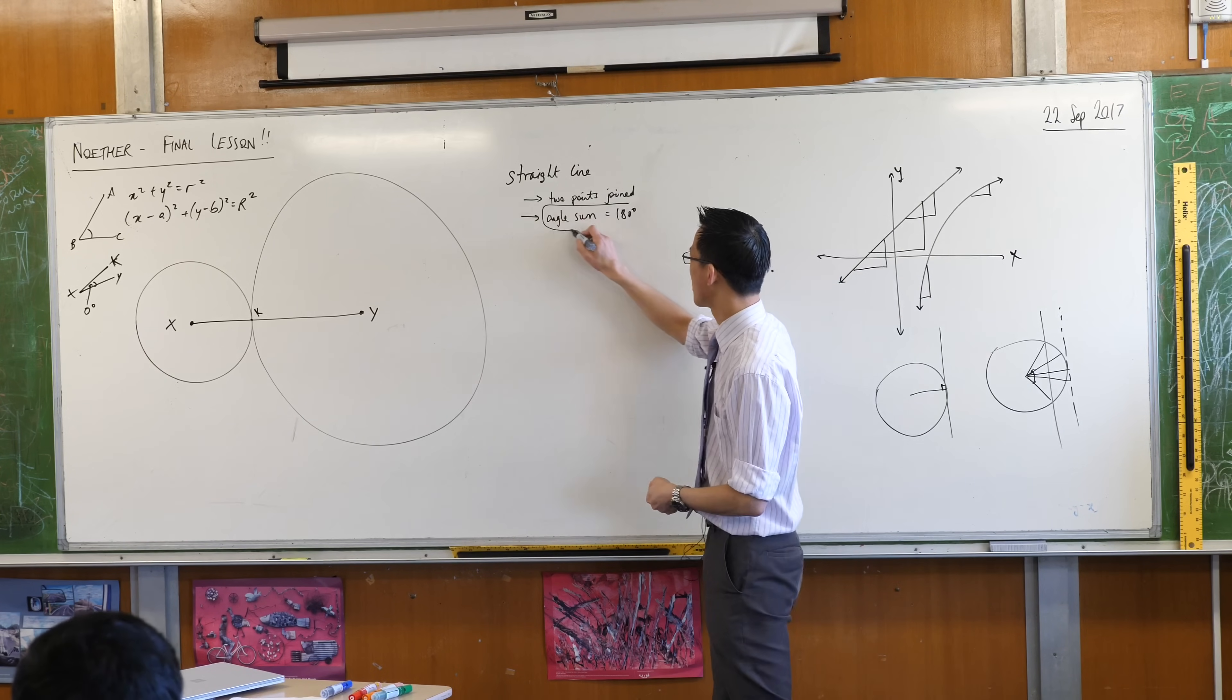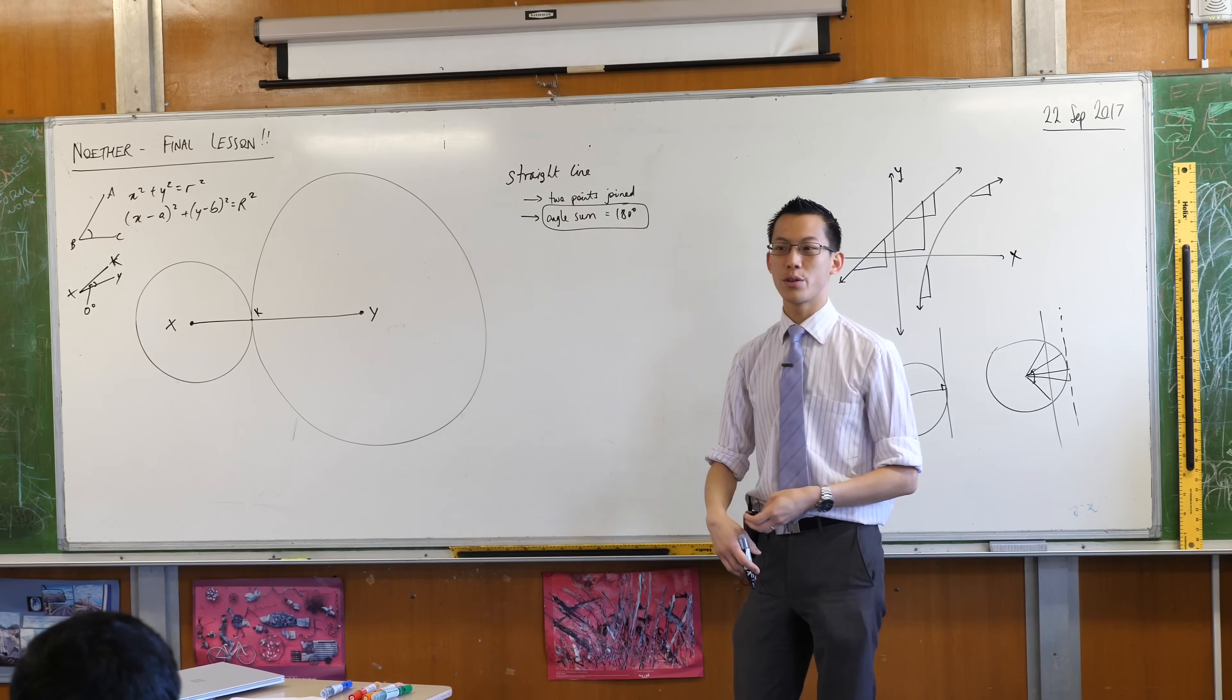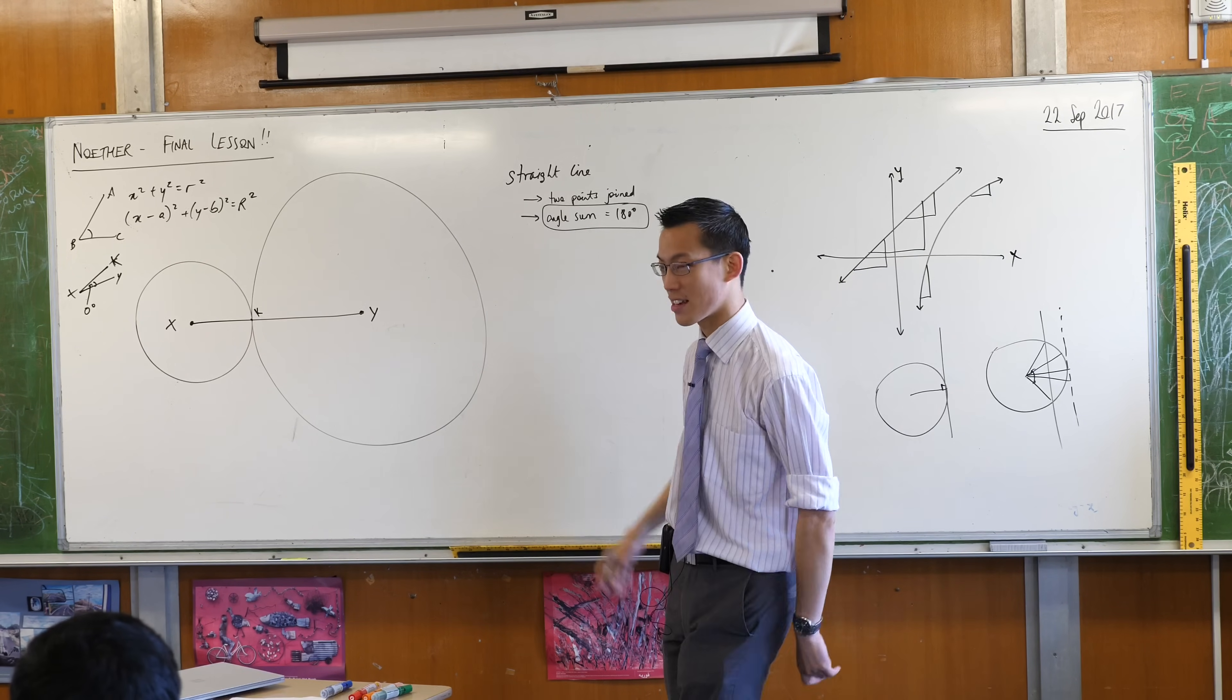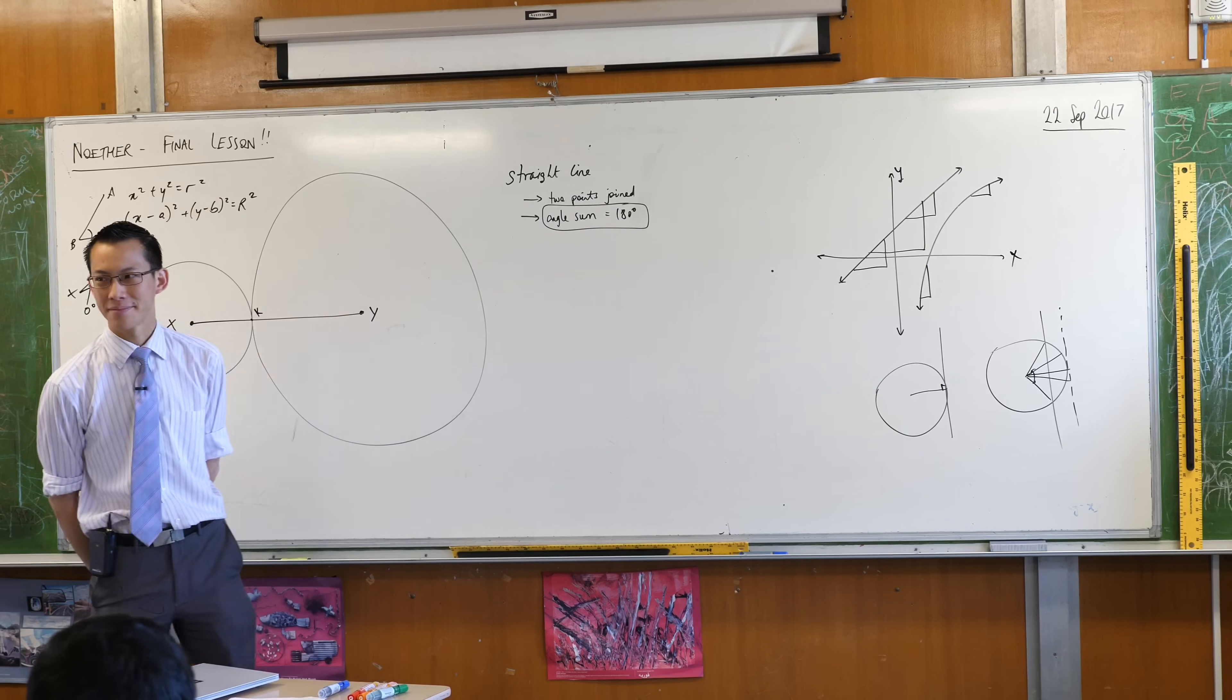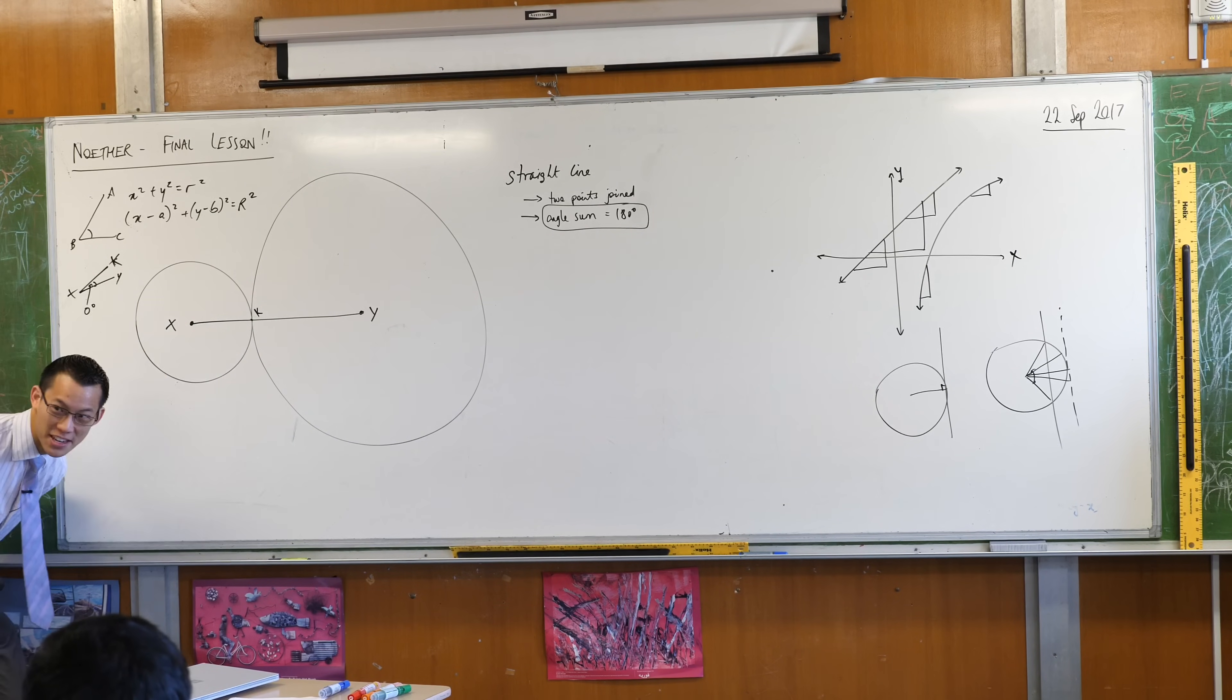So can we use the facts that we already know? For example, you've given me this. Has anyone got an idea of how we could use that fact to prove that X, K, Y is a straight line? Or that X, K, and Y are collinear? Any suggestions? What do you reckon, Jasmine? Does anyone want to construct anything? Any ideas for construction you might be useful? Tangents.